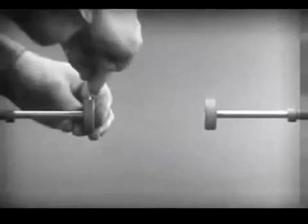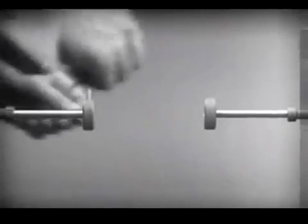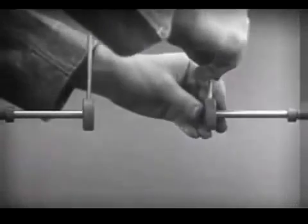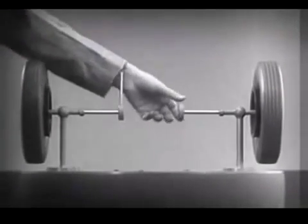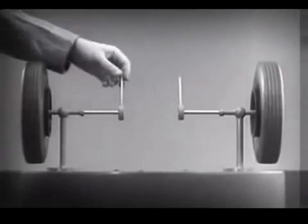Let's fasten a spoke on the inner end of each axle so that by turning the spokes we can turn each wheel separately.